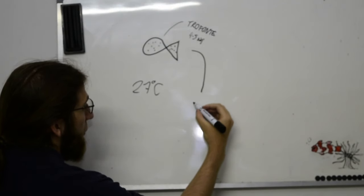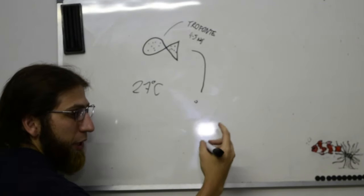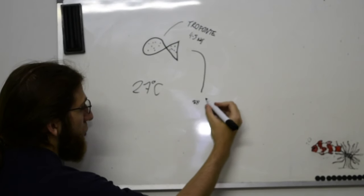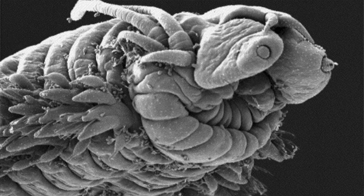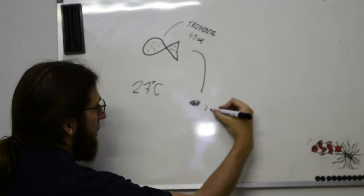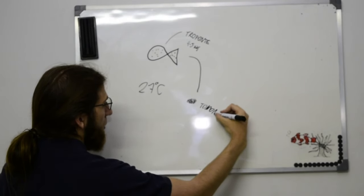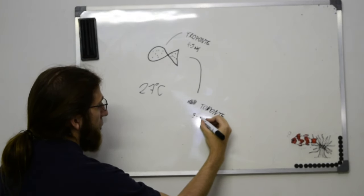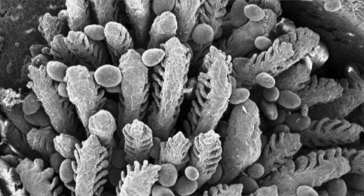E aí elas vão para o fundo, para o substrato, para o sedimento que quer que você tenha, qualquer superfície, e elas vão fazer, insisto, e vão fazer sucessivas divisões celulares. Esse estágio aqui chama-se tomonte. Esse estágio dura de 3, normalmente, nessa aqui vai ser 27, a 25 dias.